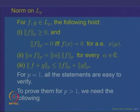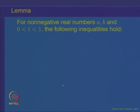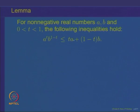For P strictly bigger than 1 we need a lemma: for every non-negative real numbers A and B, and for any fixed T ∈ (0,1), the following inequality holds: A^T · B^{1-T} ≤ T·A + (1-T)·B. For T = 1/2, this is just the statement that the geometric mean is less than or equal to the arithmetic mean. So this is the generalization of the standard AM-GM inequality.